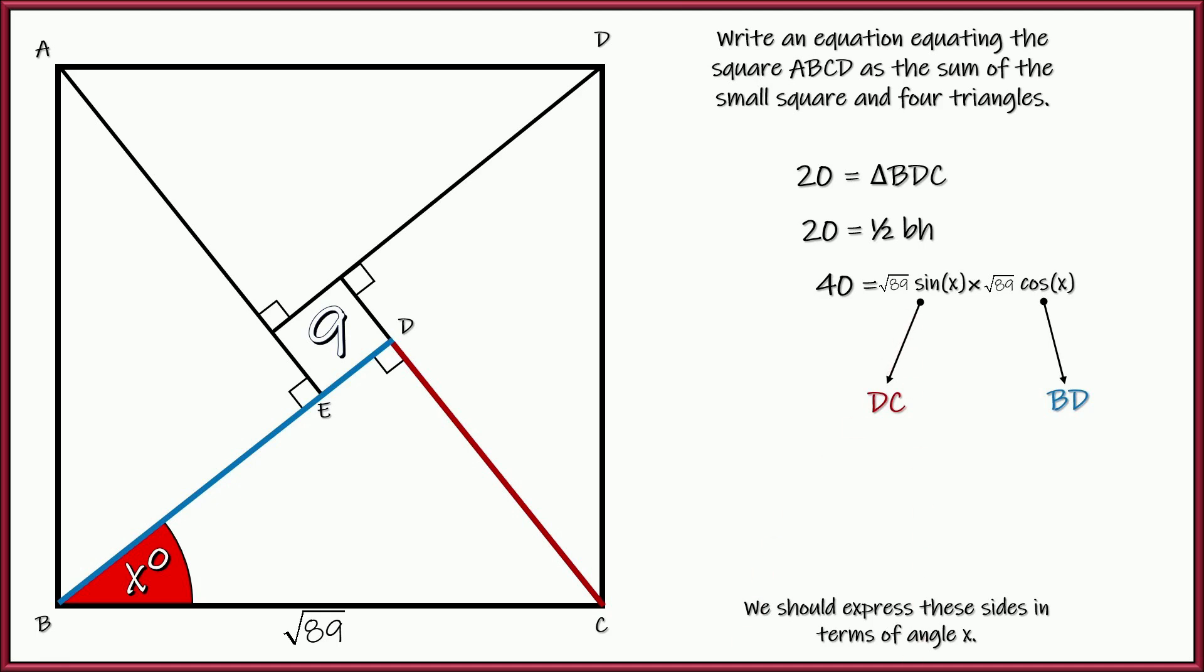So here's what we got. The square root of 89 sine of x times the square root of 89 cosine of x. All those things are multiplying. So let's go ahead and simplify that a little bit. The square root of 89 times itself is 89. And let's go ahead and divide both sides by 89. So we got 40 over 89 is equal to sine of the angle x times cosine of the angle x.